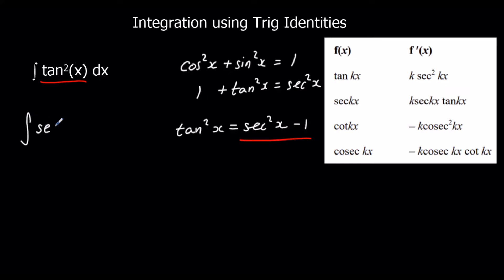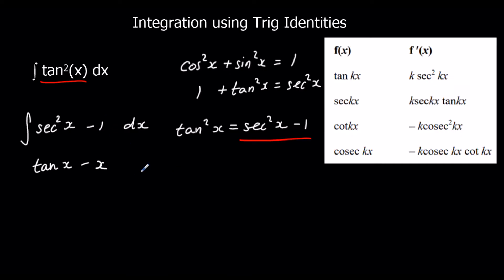So I can change tan squared x to sec squared x minus 1, and I'm going to work out the integral of sec squared x minus 1 with respect to x. Sec squared x integrates to tan x, and negative 1 integrates to negative x, giving tan x minus x plus c.